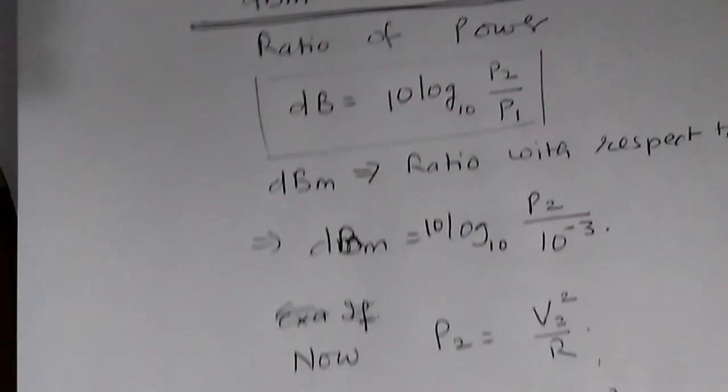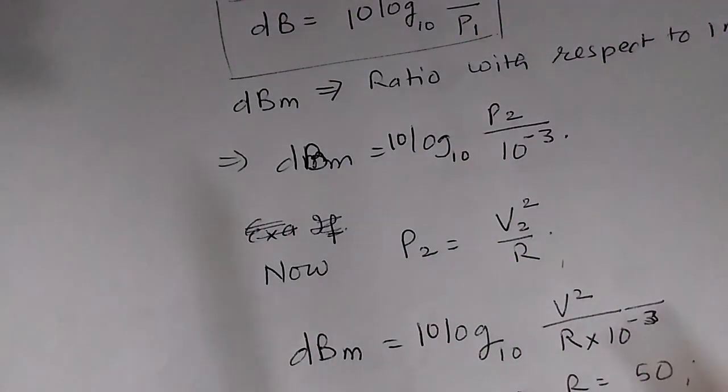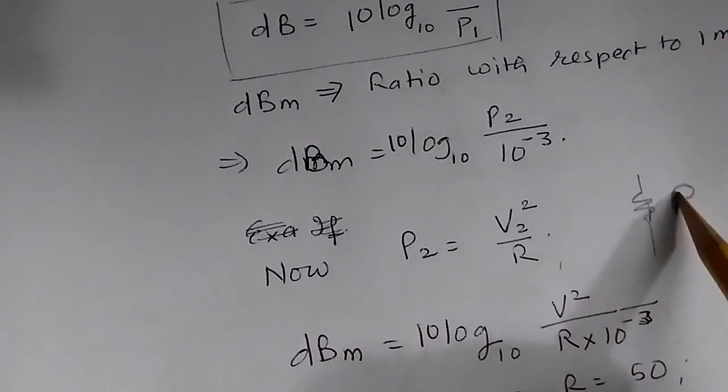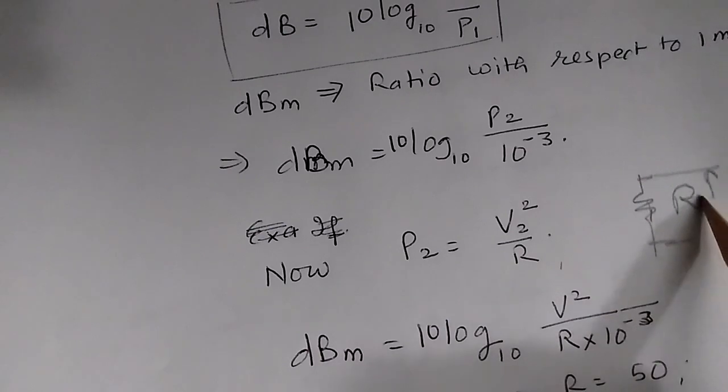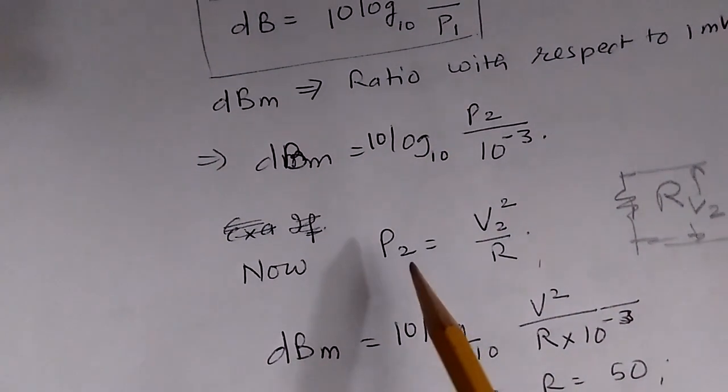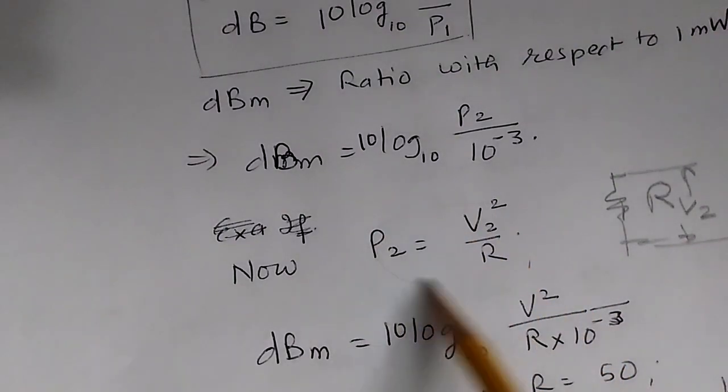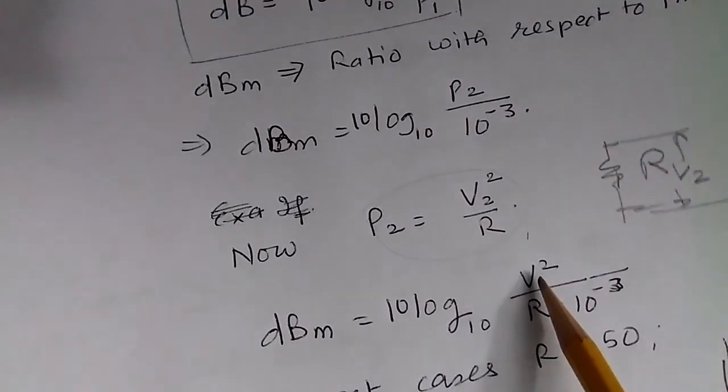Now comes the concept of voltage. Let's say we have a resistor with resistance R and voltage V2 across it. The power on this resistor can be expressed as P2 = V2² / R. If we substitute this into the formula, we get the dBm and voltage relationship.